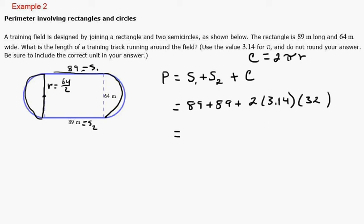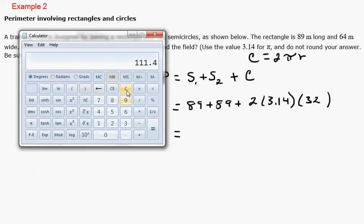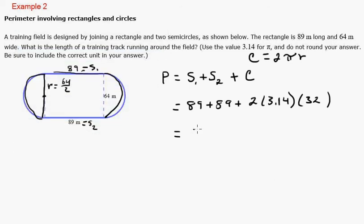So if you're pressed for time, we can just go to the calculator. I'm going to do this stuff first. So 2 times 3.14 times 32 equals plus 89 plus 89 equals. So I get 378.96, and that's going to be meters. So that's the perimeter.